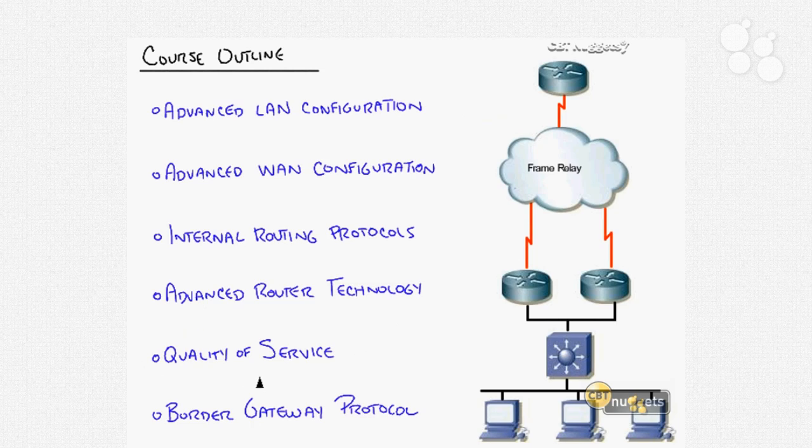Quality of service is becoming a bigger and bigger part of what you need to know, both for real-world networks and this exam. Voice, video — everything is merging into the data network, and we need to make sure voice and video get through okay. We'll cover QoS across ATM, integrated and differentiated services, queuing types, fragmentation strategies, and interleaving. Border gateway protocol comprises the rest of the series, where we talk extensively about BGP — there is so much you can do with this distance vector routing protocol that links together the various pieces of the internet.